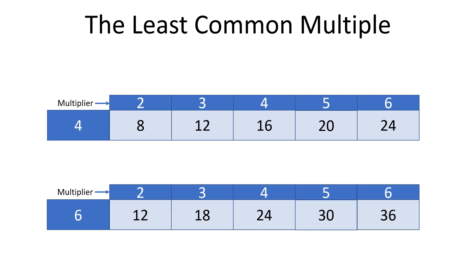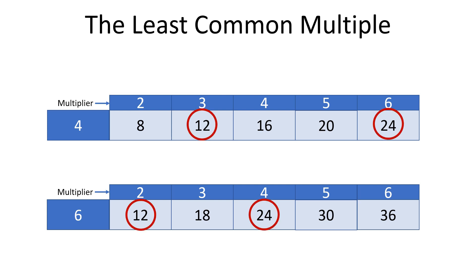And for six, we have twelve, eighteen, twenty-four, thirty, and thirty-six. If we look closer, we notice that twelve and twenty-four appear as multiples both for number four and number six.